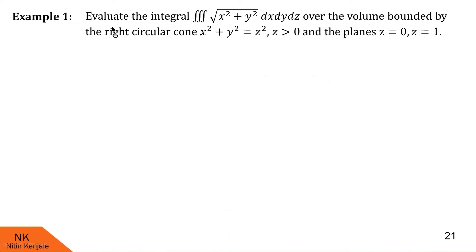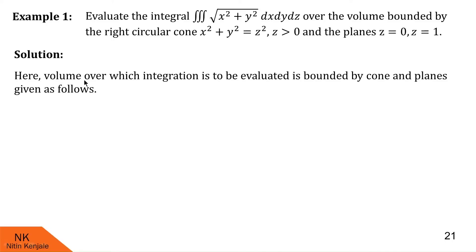In this first example, we are asked to evaluate the triple integral of the square root of x² + y² dx dy dz over the volume bounded by the right circular cone whose equation is x² + y² = z² for all z greater than 0, and the planes z = 0 and z = 1. Here the volume over which the integration is to be evaluated is bounded by the cone and planes z = 0 and z = 1.